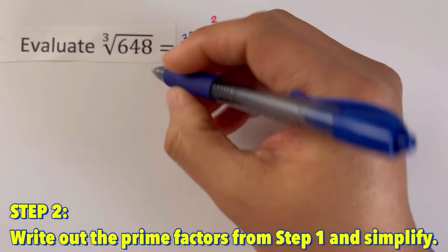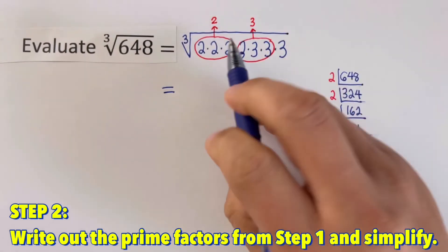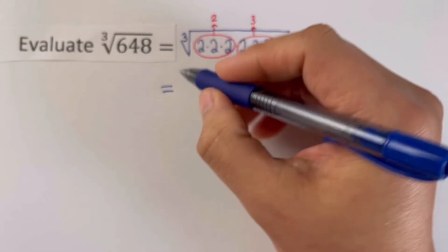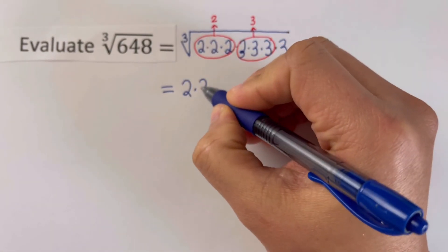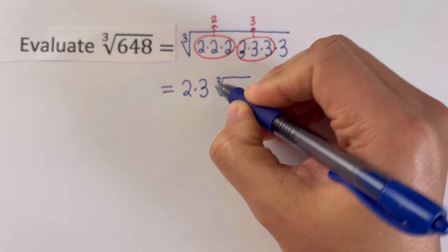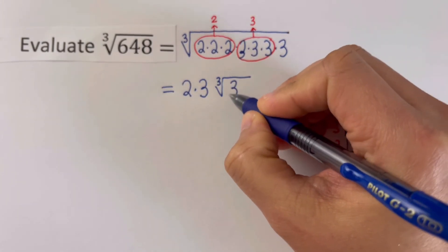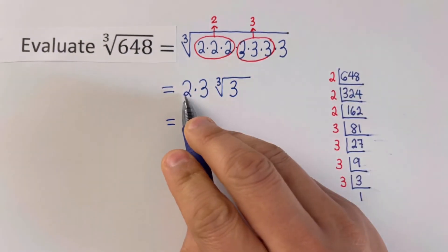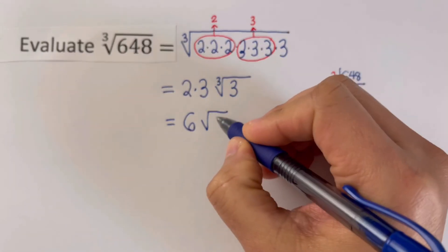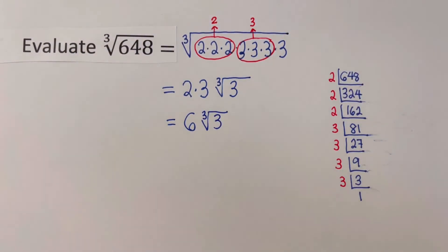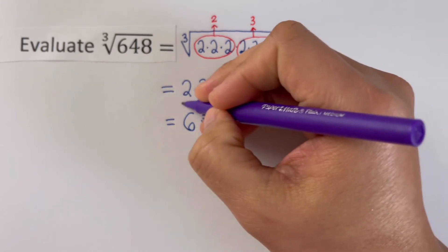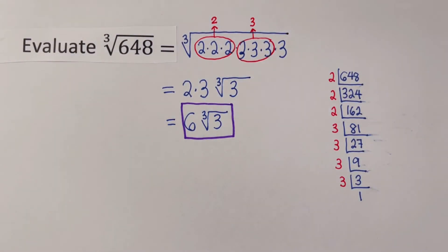So we write it down: the first two groups give us 2 and 3, so 2 times 3. Then we have the cube root of whatever's left over inside the radical symbol, which is 3. We can simplify: 2 times 3 is 6. And that is 6 times the cube root of 3 — the simplified version of this radical expression.